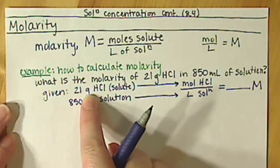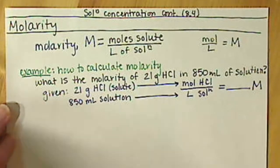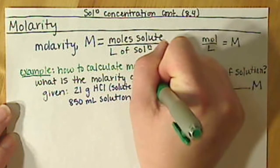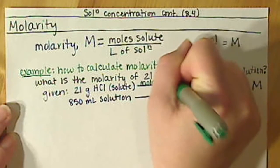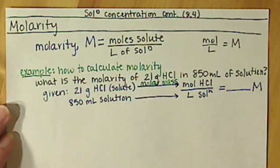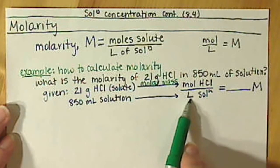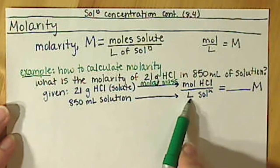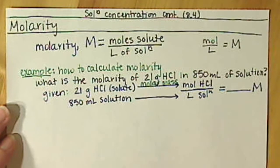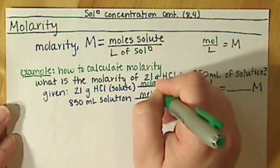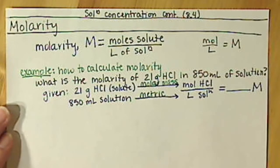Any time we're going from grams to moles, we use molar mass from our periodic table. And from milliliters to liters, that's our metric conversion — we got used to that in Chapter 7 using the ideal gas law.